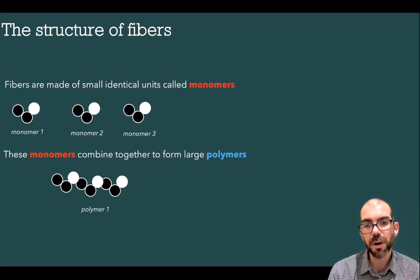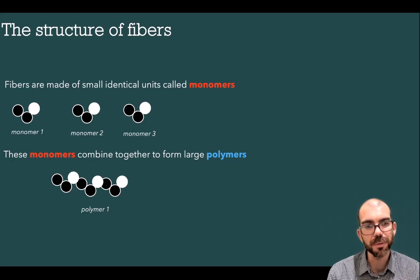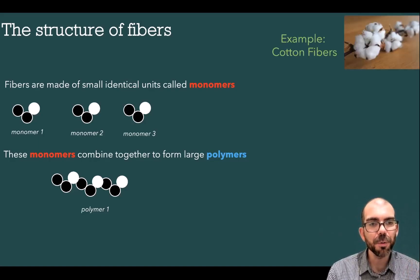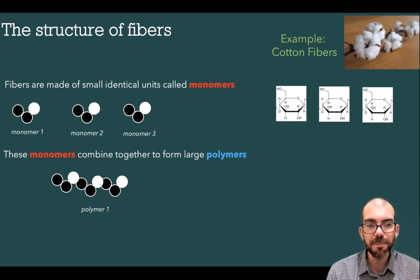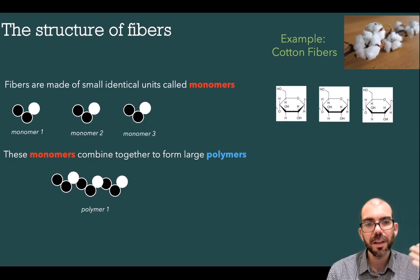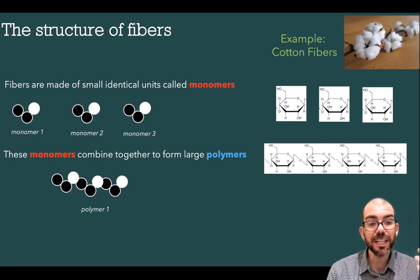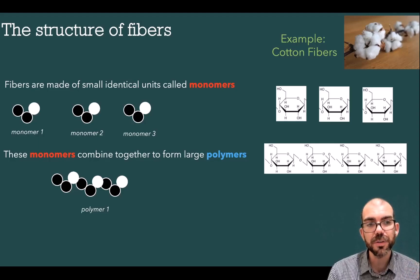Here you can see a polymer formed by attaching together monomers. Let's look at an example with fibers — in this case, cotton. The cotton monomers are carbohydrate molecules. They're small, they have the same formula, they're the same repeating unit — they're monomers. Attached together, they form a long polymer called cellulose that makes up the entire fiber.